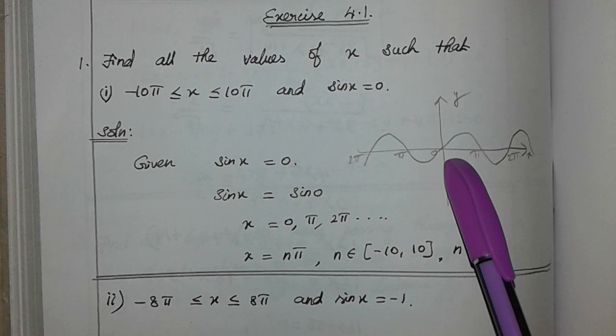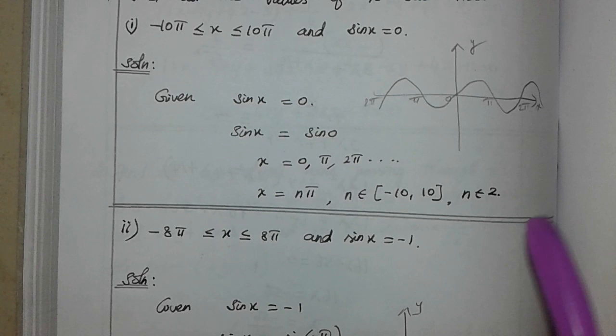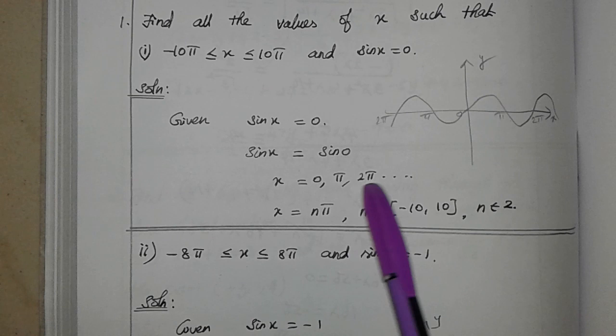Sin x is equal to 0. The first principle value is 0. We know sin 0 plus π by 2, that's the principle value. Sin x is equal to sin 0. Sin x is equal to 0, π, 2π, all the values.